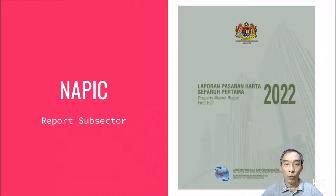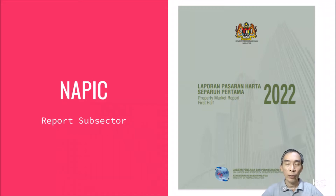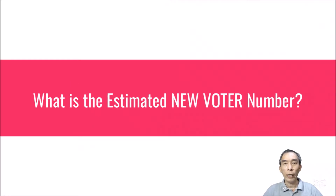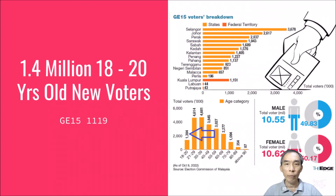I refer to the NAPIK figures for the first half of 2022, January to June, which has been discussed in earlier video recordings — you can go back to those for the NAPIK figures overlapping with agency regional distribution. This particular recording is more focused on using the new voter numbers from a recent publication on the GE15 voters breakdown.